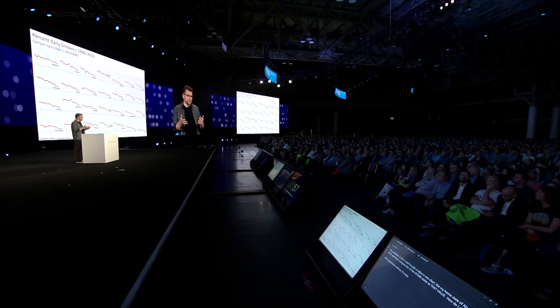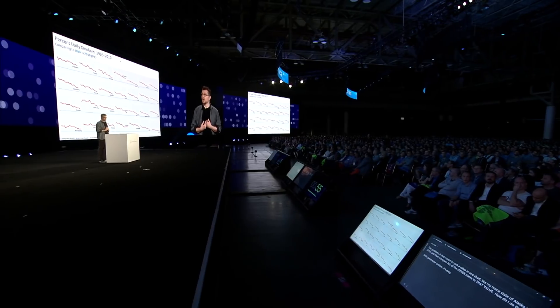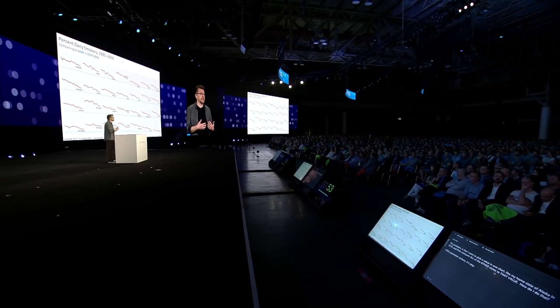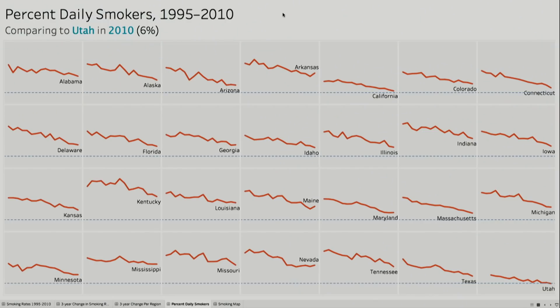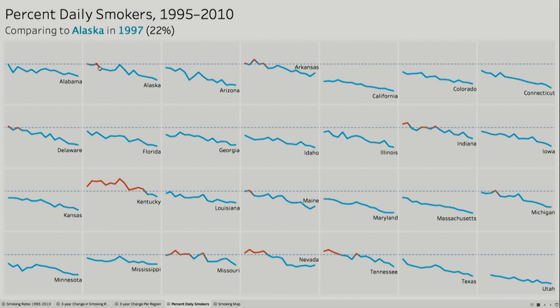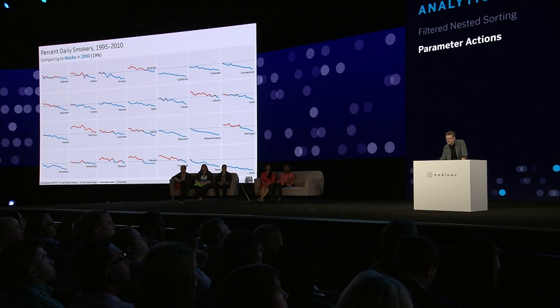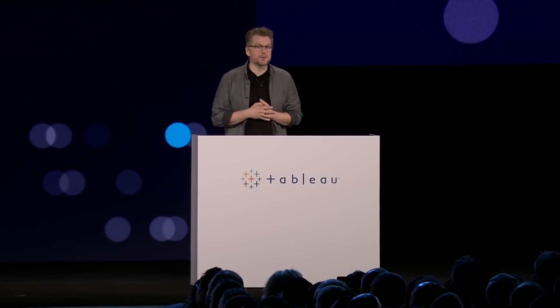Let's take another look at that data broken down by state. I want to pick a value in one chart — like my home state of Alaska in maybe 2010 — and then compare all the other states to that value. When I hover over Alaska, my parameter action takes the value of the smoking rate straight into the parameter. These things don't get from good to great without your participation, so go ahead and give yourselves a hand too.